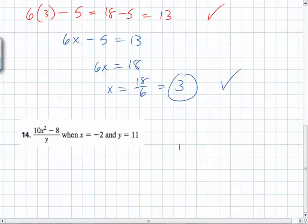You're supposed to evaluate, so you need to plug in there. So it's going to be 10. And one good practice when you're plugging in numbers, just put parentheses around them all. So it's going to be negative 2 squared minus 8 all over what? 11.